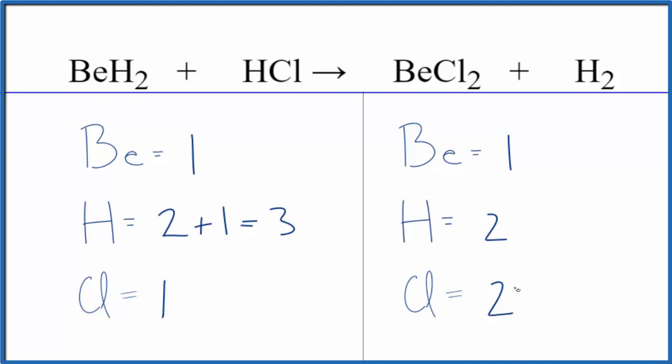Probably the easiest thing to do would be to get this to be an even number. And since I have a hydrogen here and two here, I think I'll put a two in front of the HCl. So let's update this.